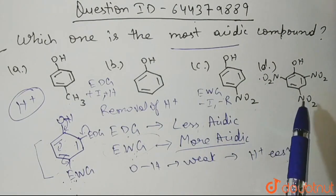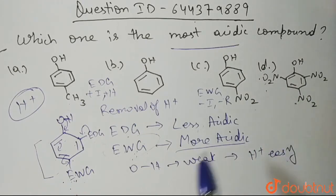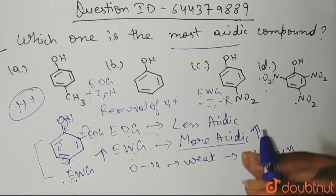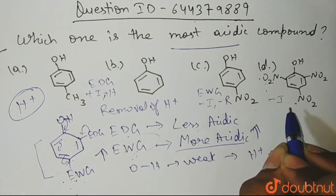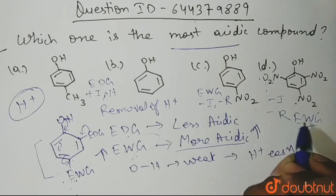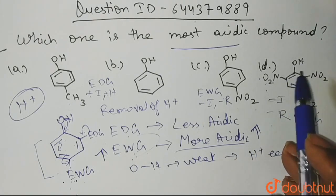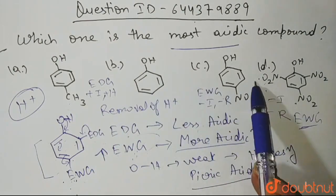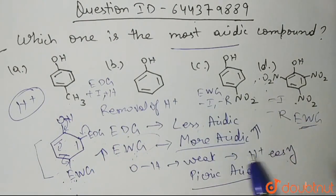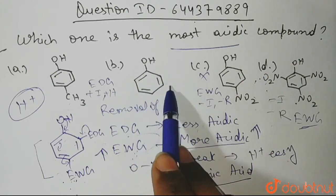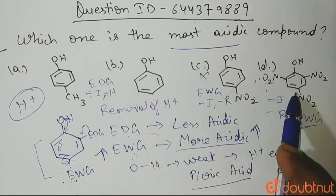Now, looking at option D, how many nitro groups are there? 1, 2, and 3 nitro groups are present. More electron withdrawing groups present in a compound means more acidity. All three NO2 groups are applying −I (minus inductive effect) and −R (minus resonance effect) — all of them are electron withdrawing groups. This compound is also known as picric acid. It will be the most acidic among all four options, since option C has only one electron withdrawing group but option D has three.